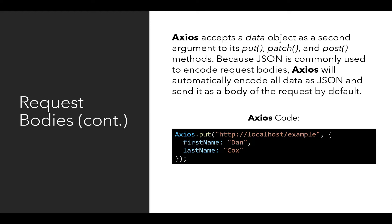Notice this Axios code: we're using the put method. The first argument is a string value of the URL — its protocol HTTP colon slash slash, its domain localhost, then the path slash example. The second argument is an object with two properties: firstName with the value Dan, and lastName with the value Cox. This is the request body corresponding to the request being generated by axios.put. It will use the HTTP verb PUT, send using HTTP as the protocol, using localhost as the domain and the path slash example, and encode the request body along with that.